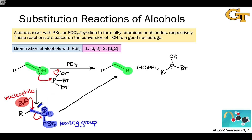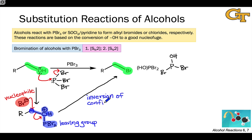This mechanism gives us useful information about the stereochemical course of the reaction. Because an SN2 step occurs at the electrophilic carbon, we should expect an inversion of configuration at that carbon. In this particular example, the electrophilic carbon is primary and not a stereocenter, but in cases where that carbon is a stereocenter, we should expect inversion.